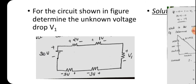To determine the unknown voltage drop V1, we know it is a series circuit and all the voltage drops except the unknown are given, so we can simply apply Kirchhoff's Voltage Law. Kirchhoff's Voltage Law states that the algebraic sum of voltages around a closed path is equal to zero.